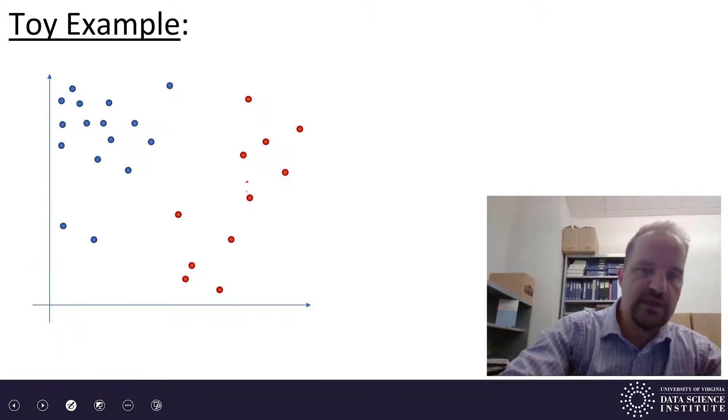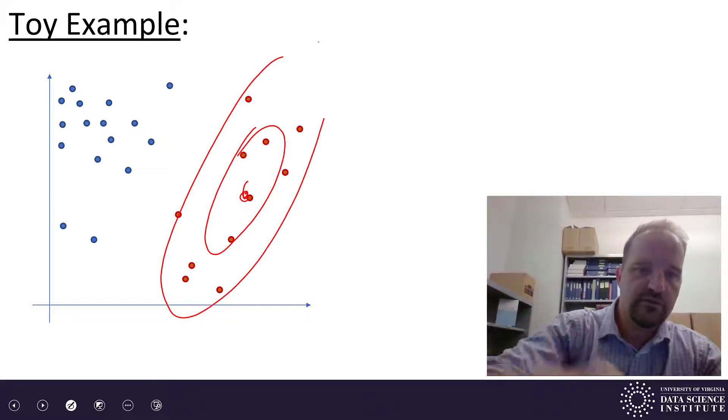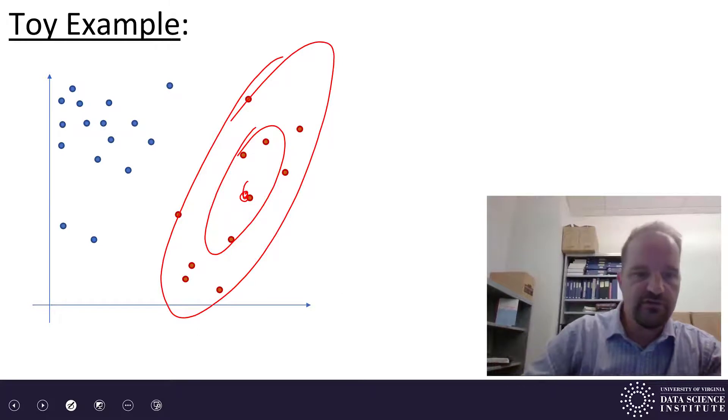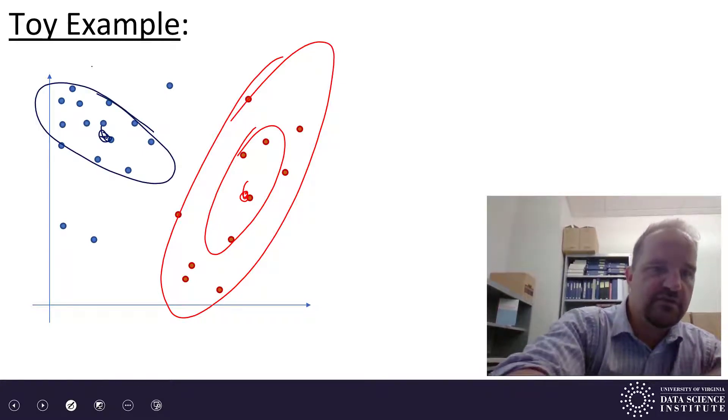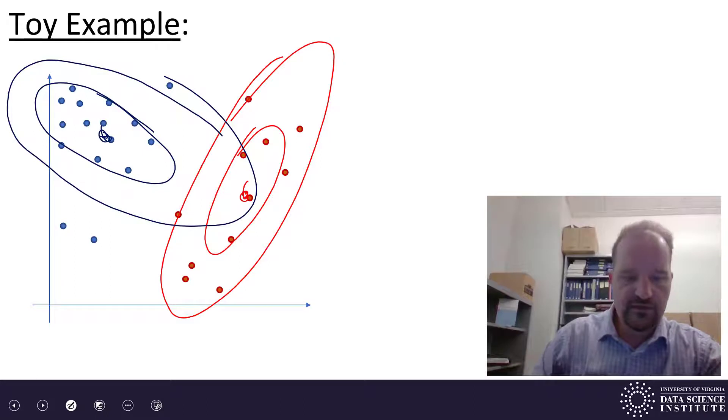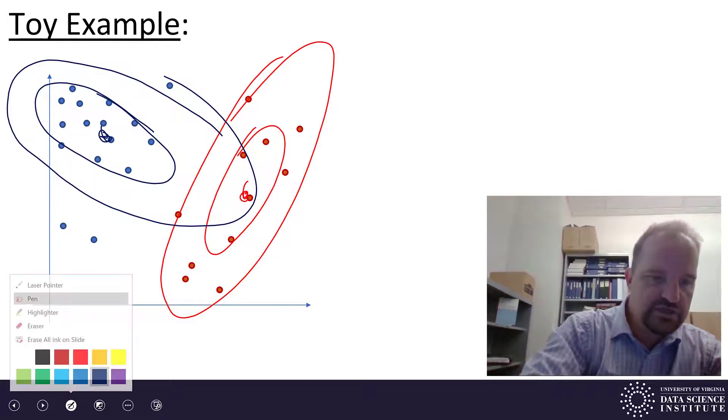So I estimate the mean for my red data is about here. And then if I model this with a probability distribution it probably would look something like that if I assume it has a Gaussian distribution. And then for my other data maybe it has distributions that look like this.